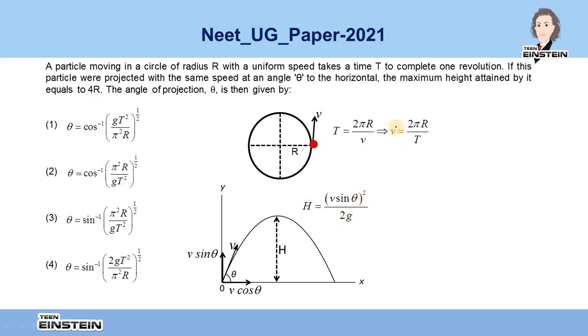If we put the value of v, we get H equals (2πR/T × sin theta)² divided by 2g.